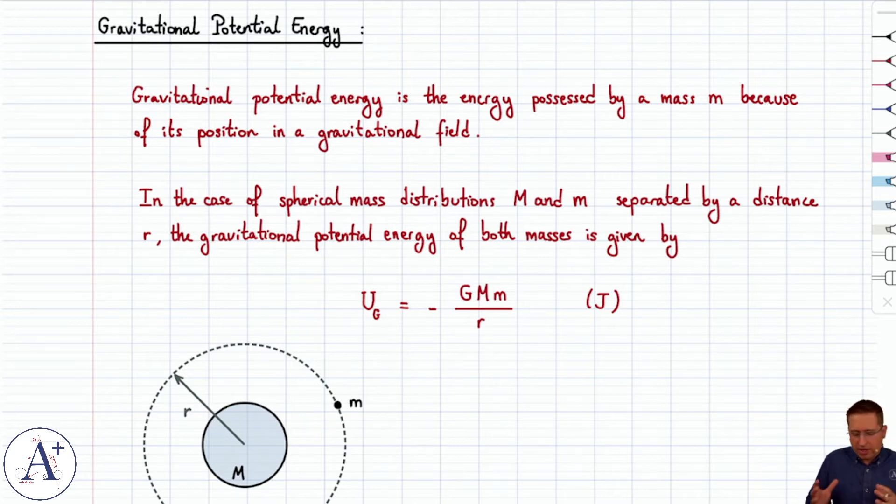But let's revisit it because now we have a bit more context and a better understanding of what a gravitational field is. So gravitational potential energy is the energy possessed by a mass because of its position in the earth's gravitational field. In general because of its position in a gravitational field, most of the time it's the earth's gravitational field.